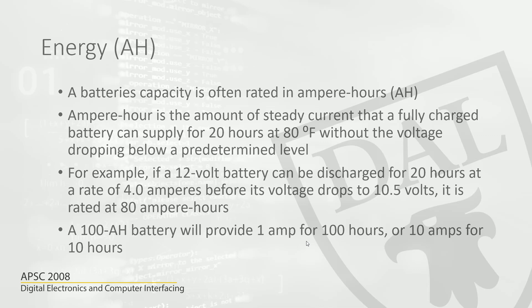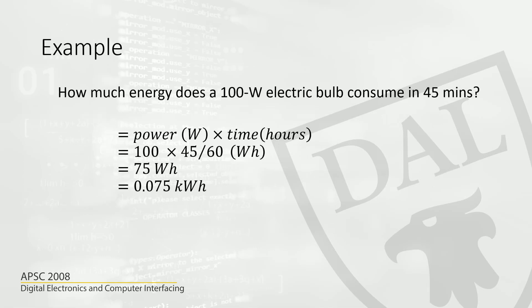Here is a worked example: how much energy does a 100 watt electric bulb consume in 45 minutes? 100 watts is the power. 45 minutes out of 60 minutes is three-quarters of an hour, so 0.75 times 100 watts is 75 watt hours. Dividing by 1000 to convert to kilowatt hours gives 0.075 kilowatt hours consumed in 45 minutes.